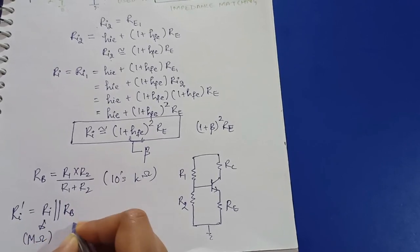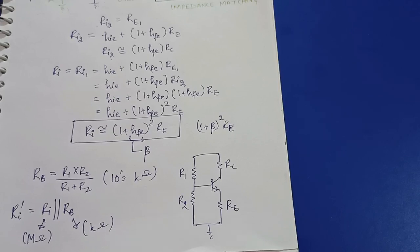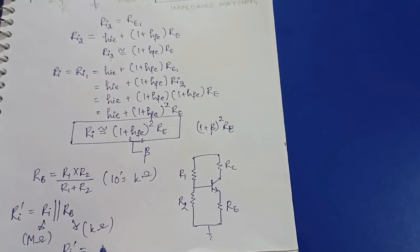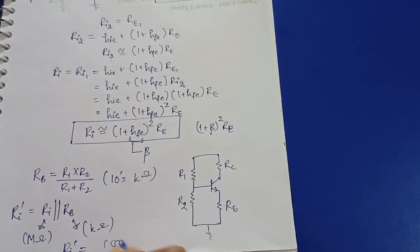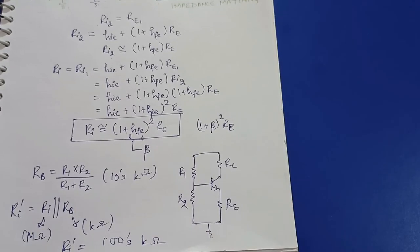When the parallel combination of these two resistances is taken, the overall input resistance decreases and comes out to approximately hundreds of kilohms, which is not good for the Darlington amplifier because it is supposed to have high input resistance. So we don't use the self-bias circuit in the Darlington amplifier.